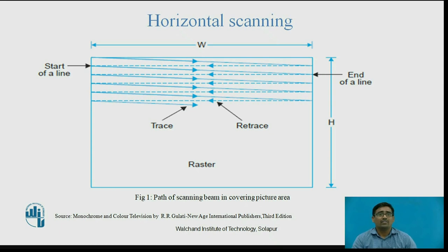This figure shows the horizontal scanning path of the scanning beam in covering the picture area. This diagram is drawn as width versus height. The start of a line is from the top left-hand side to the right-hand side. This dashed line is called the trace line, and this dotted line shows the retrace path. All these processes happen in the raster.